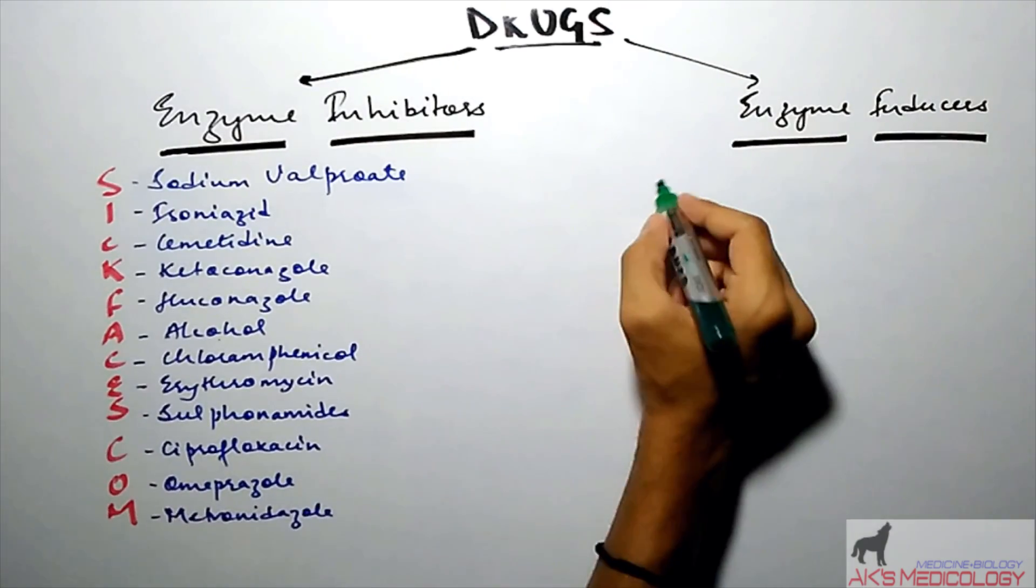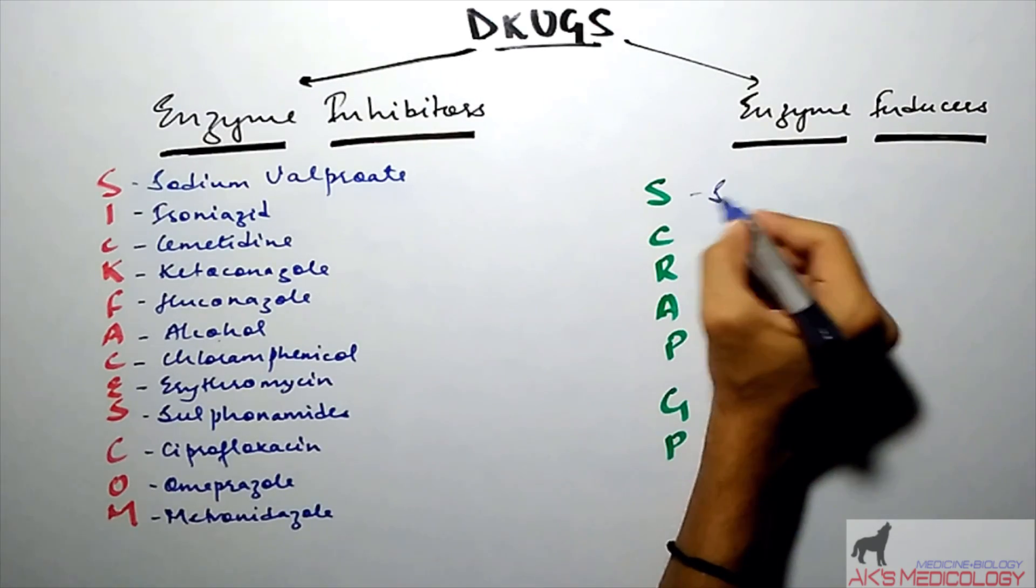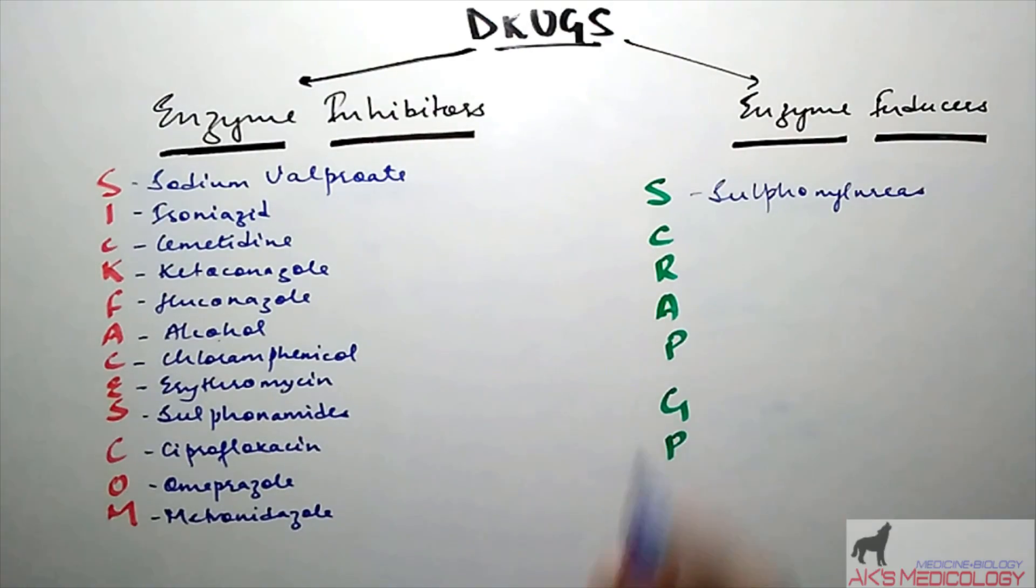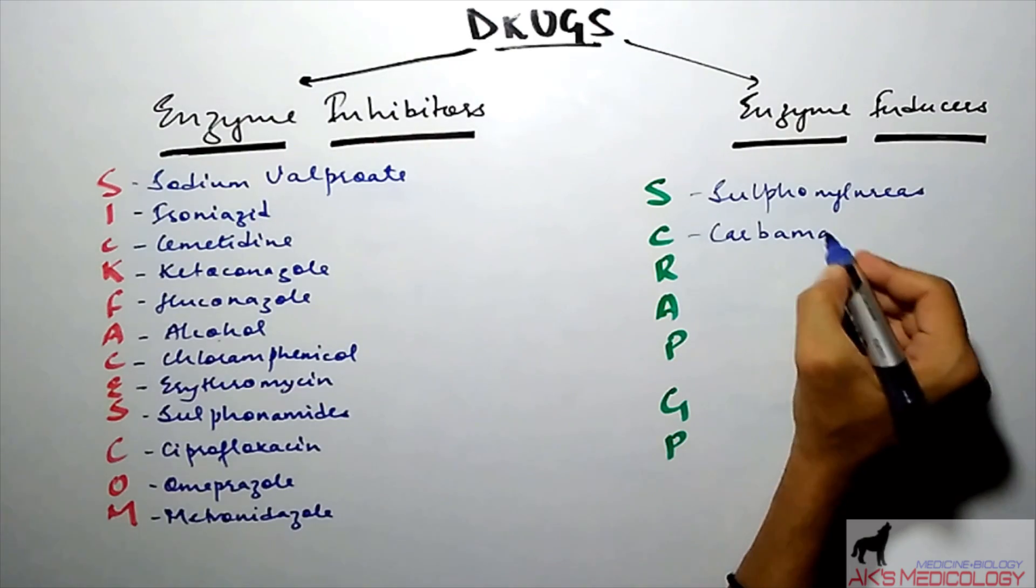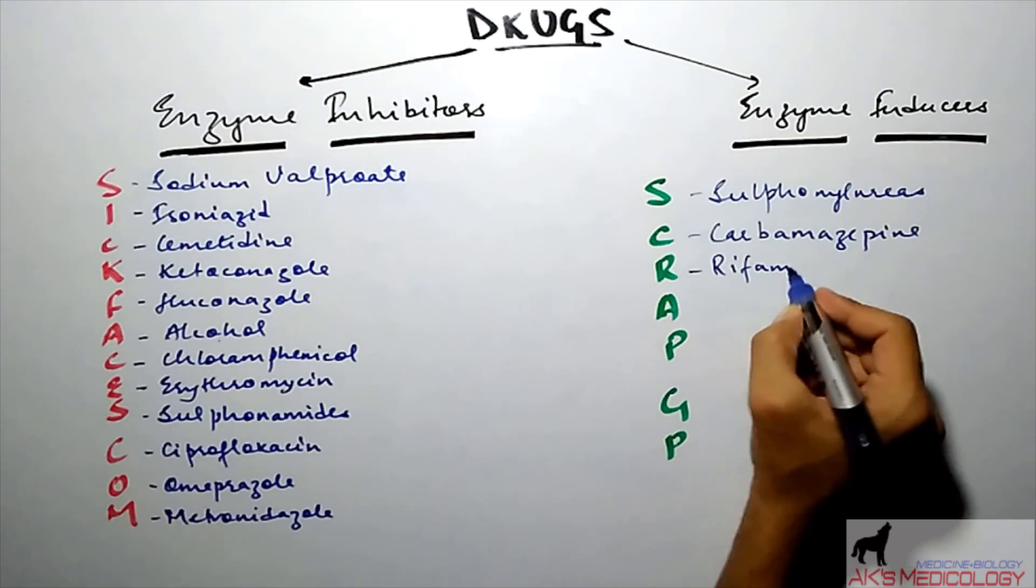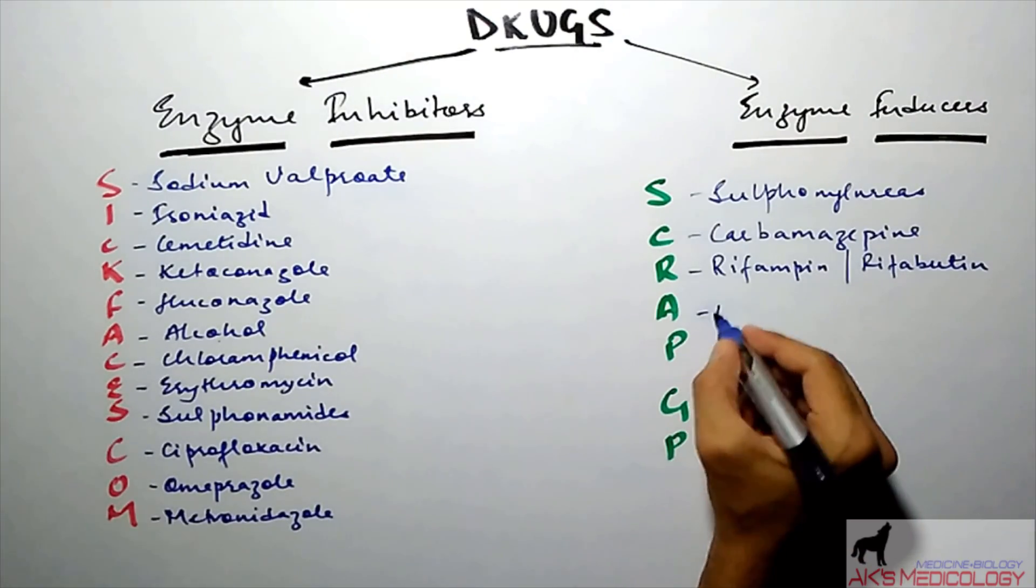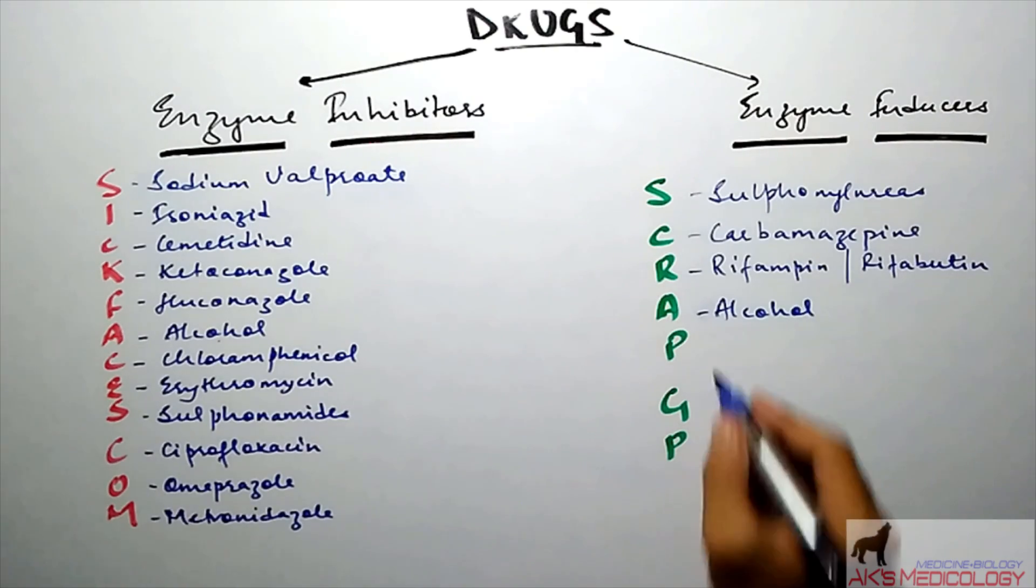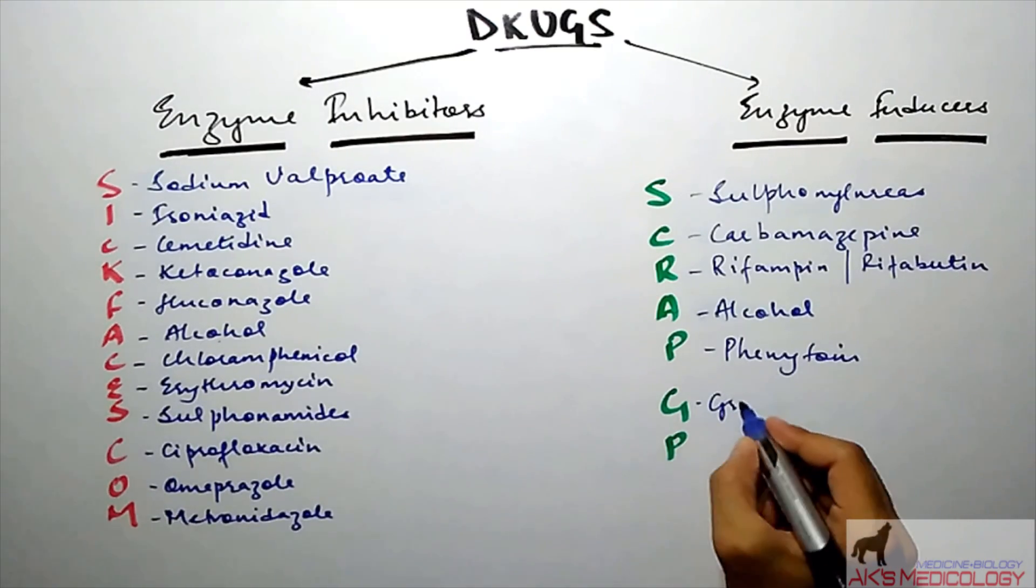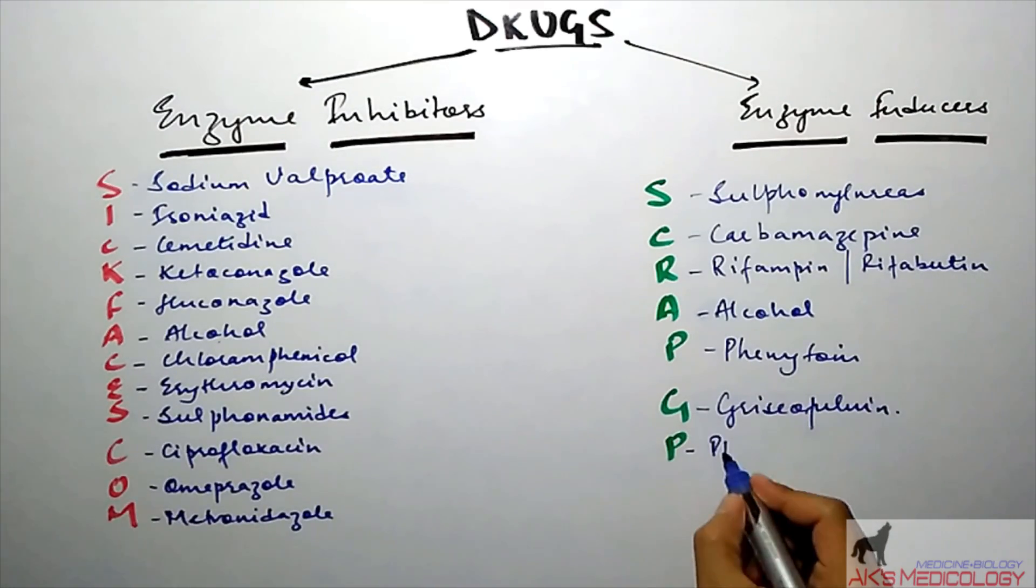Enzyme inducer drugs could be remembered by the mnemonic SCRAP GP. Here S stands for sulfonylureas, C stands for carbamazepine, R stands for rifampin or rifampicin, A here is again alcohol, P stands for phenytoin, G is griseofulvin, and last P is phenobarbital.